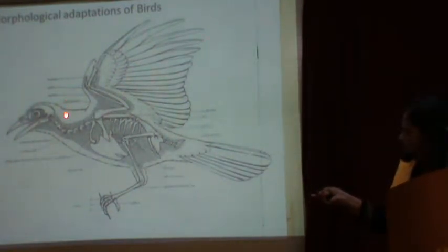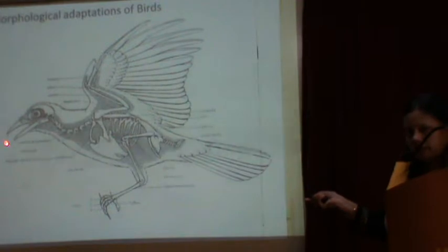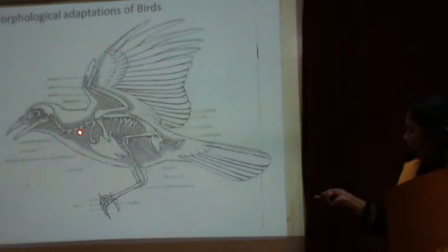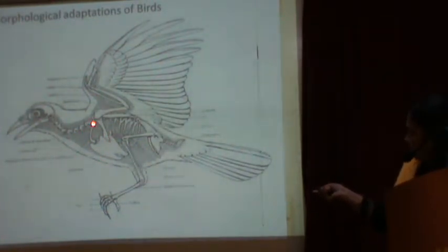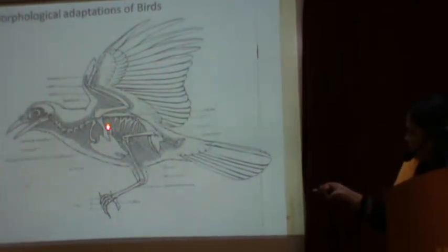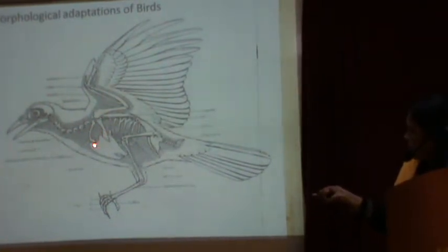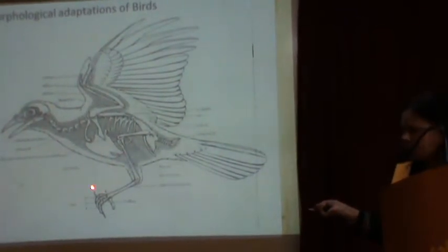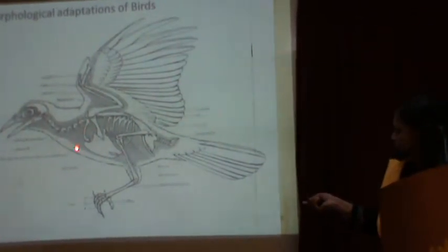A highly mobile neck is present in birds, connecting the head region to the trunk region. The trunk region is divided into two parts: the anterior thoracic region and the posterior abdominal region.